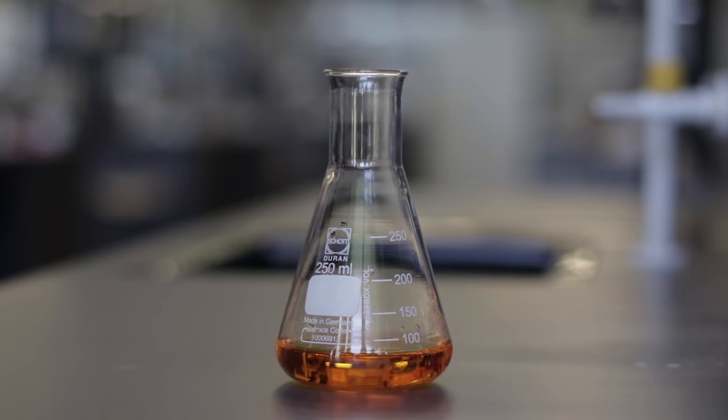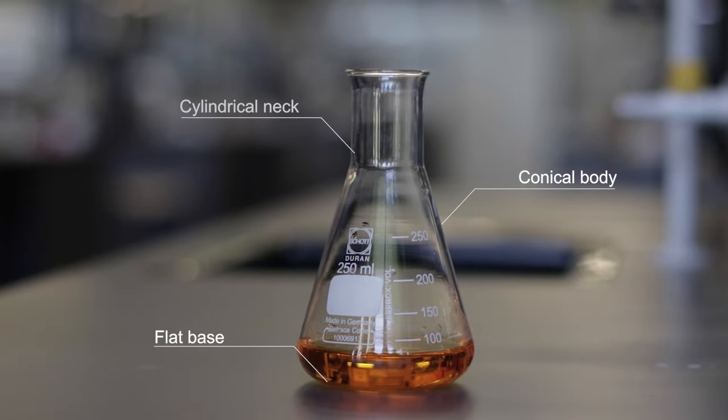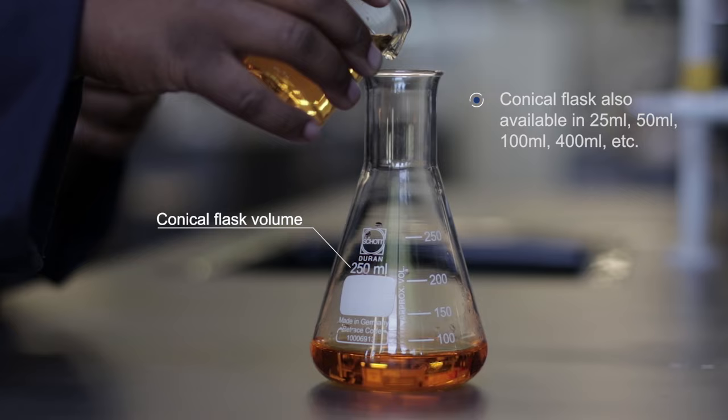It possesses a flat base, conical body and a cylindrical neck. A conical flask is found in different volumes.